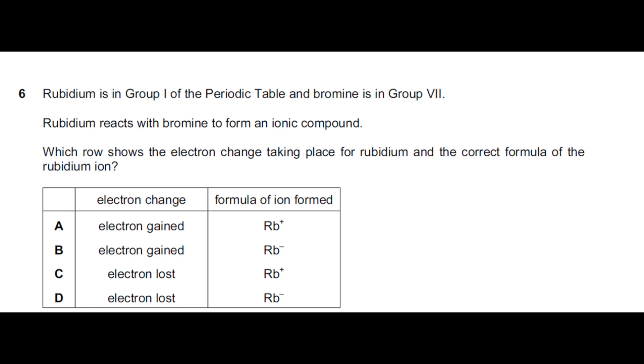Rubidium reacts with bromine to form an ionic compound. There is a transfer of electron. Which row shows the electronic charge taking place for rubidium and the correct formula of the rubidium ion?